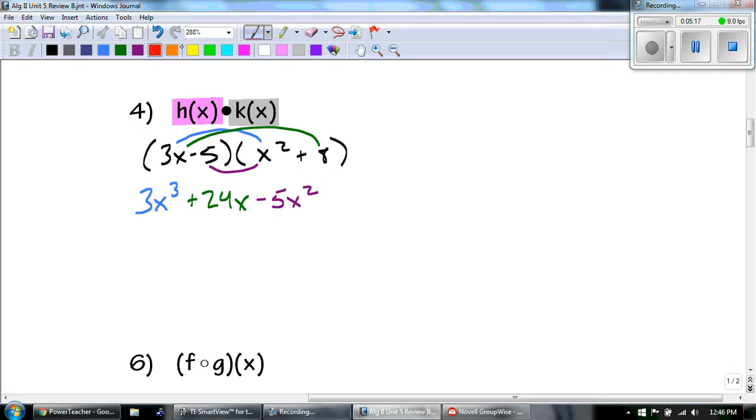Next one. We have h of x times k of x. So I'm going to take h of x, which is the 3x minus 5. And I'm going to multiply that with x squared plus 8. Now you can do box method or you can distribute either one. It doesn't matter. For this one, I'm just going to distribute.